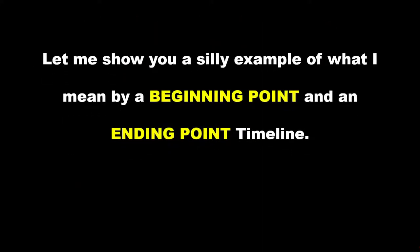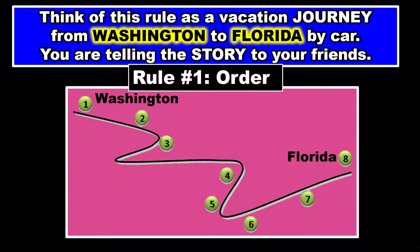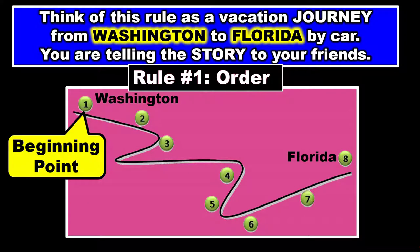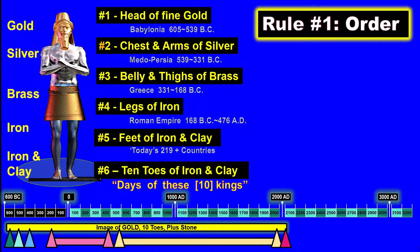Let me show you a silly example of what I mean by a beginning point and an ending point timeline. Supposing you took a journey from Washington State to Florida by car and you're telling this story to your friends. Number one is Washington State where you begin, and the ending point is Florida where you end. There are points in between that you're going to tell your friends about.